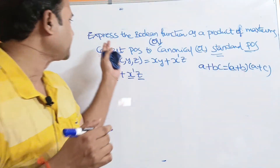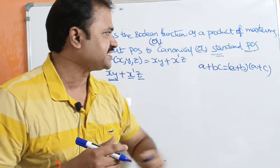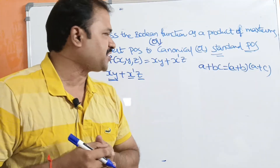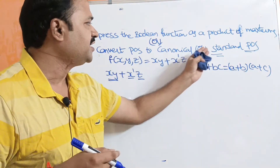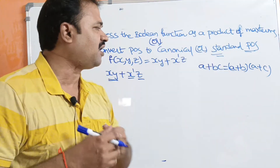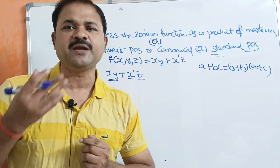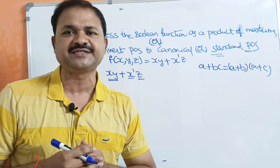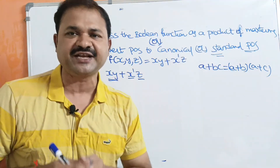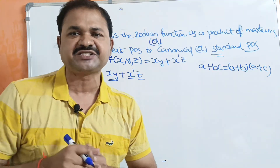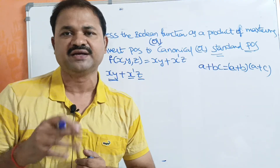Let us discuss expressing a boolean function as a product of maxterms, or converting POS to canonical or standard POS. Canonical or standard POS means it contains a product of maxterms where each maxterm contains all the variables or literals.